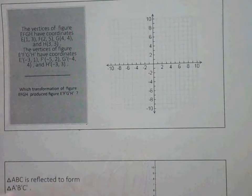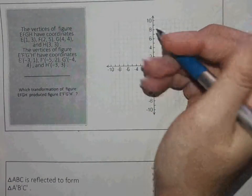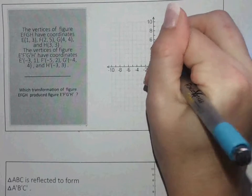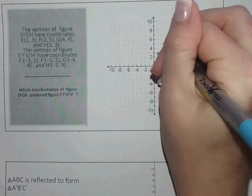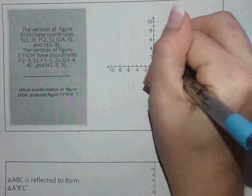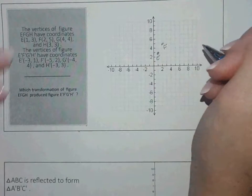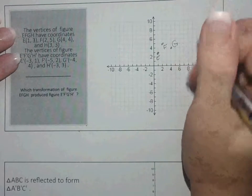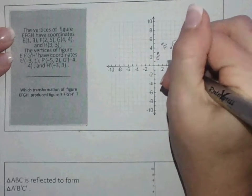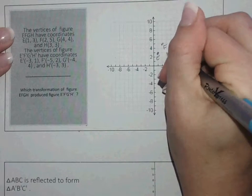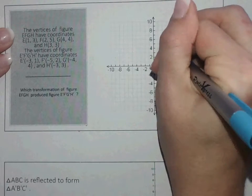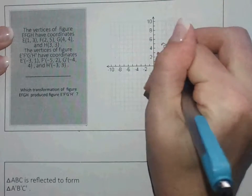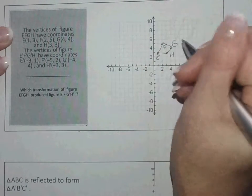Okay, the vertices of figure EFGH have coordinates of E 1, 3, F of 2, 5, G of 4, 4, and H of 3, 3. So this is a parallelogram. Nope, it's not. It's just a quadrilateral.